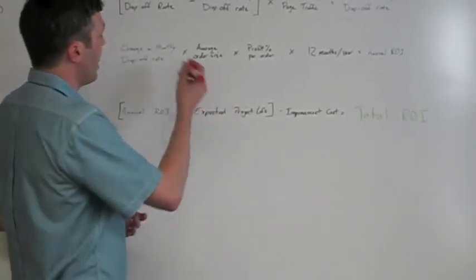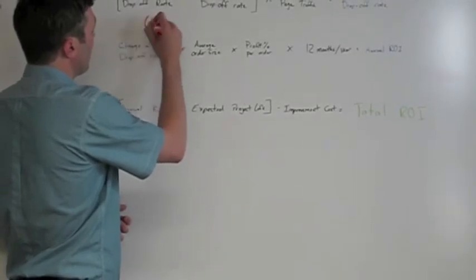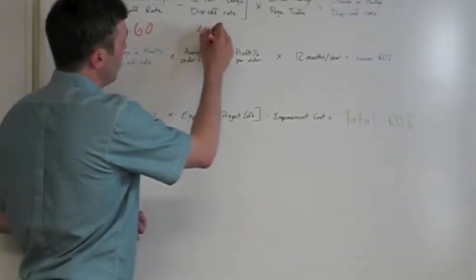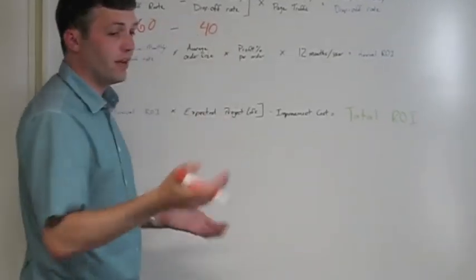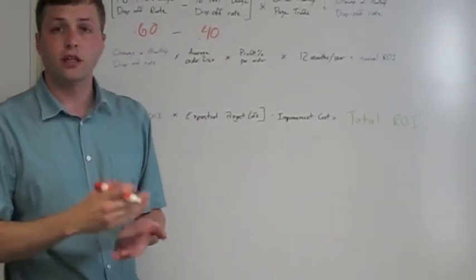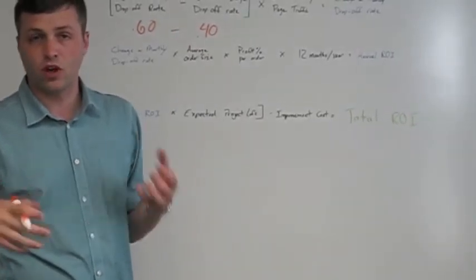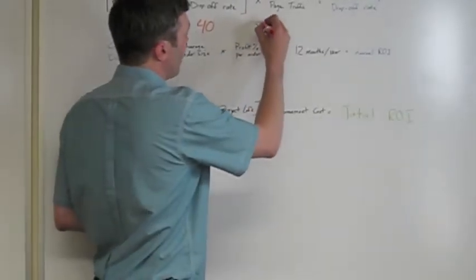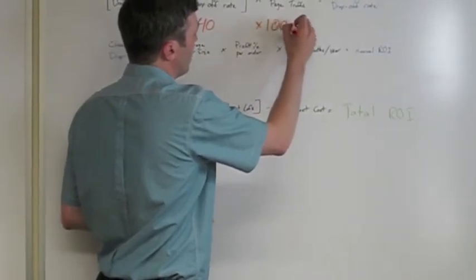So let's say you have currently a drop off rate of 60%. And you're hoping to get down to a 40% drop off rate, which is definitely possible if you can understand your analytics and understand your end user and really get a sense of where the problems are and make incremental changes.